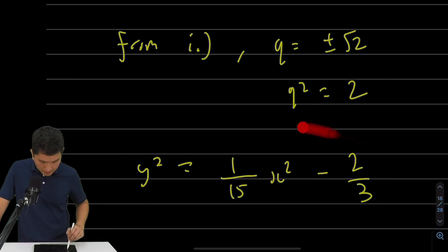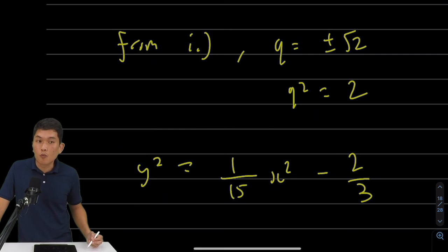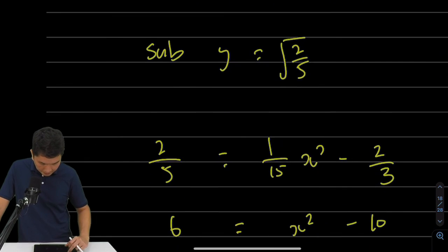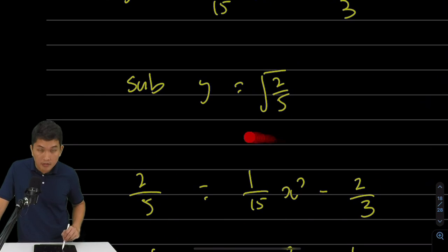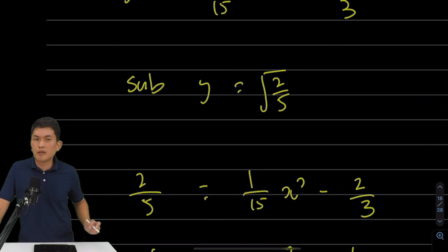So let's rewrite that. And now let's substitute y equals to square root 2 over 5. If y equals square root 2 over 5, then y-square equals to 2 over 5. Then I'm getting this equation over here.